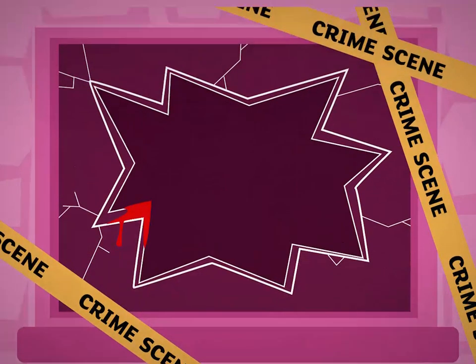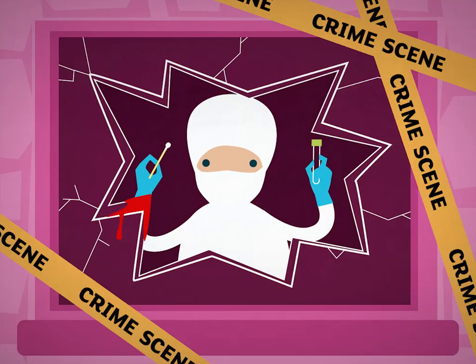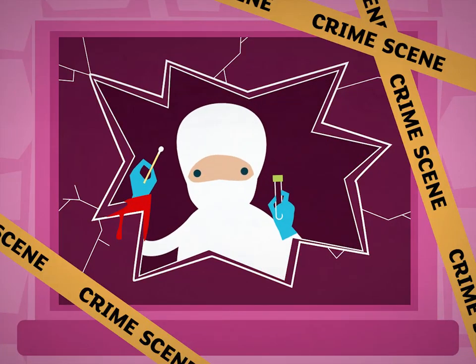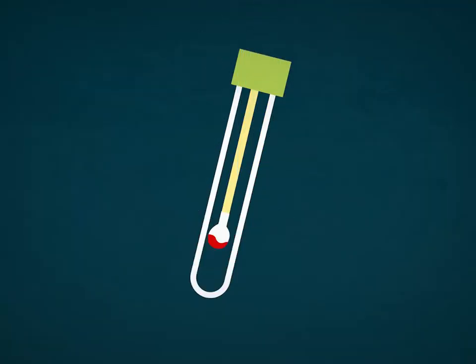The burglar smashed a window, leaving blood on the broken glass. Samples of blood, hair or skin can be collected from a crime scene. Forensic scientists investigate the samples in a lab.